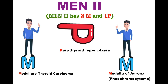In the second picture, two men are standing on separate M and there is a P instead of M. So MEN type 2 contains 2M and 1P. The 2M are medullary thyroid carcinoma and pheochromocytoma, and P stands for parathyroid hyperplasia.